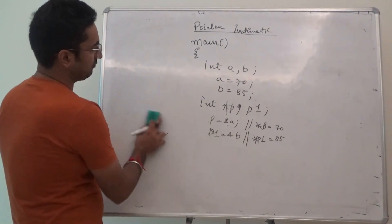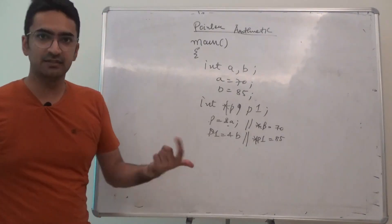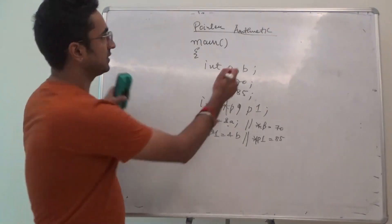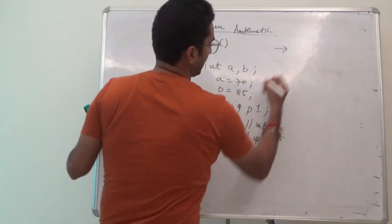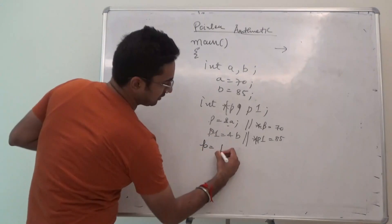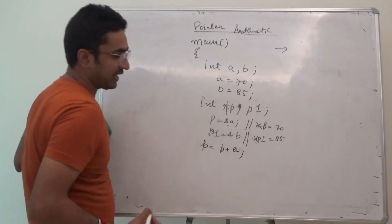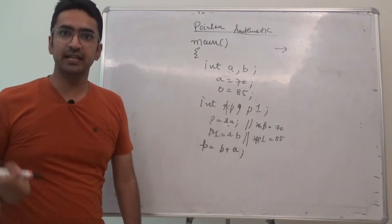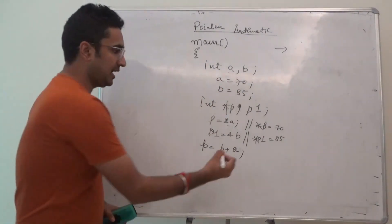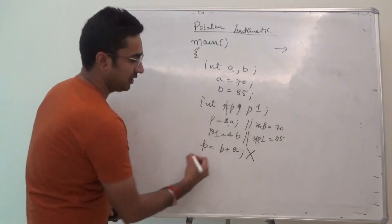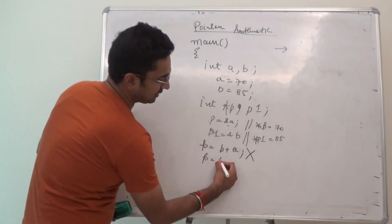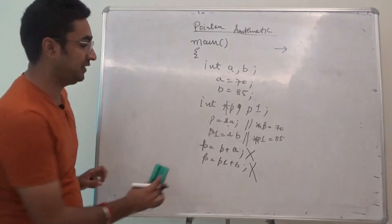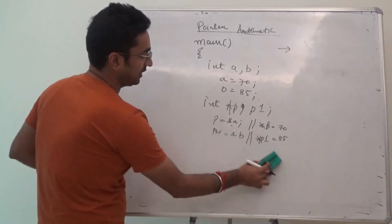So, the point over here with pointer arithmetic is that we can manipulate the values accordingly also. In pointer arithmetic, the point is direct, I cannot write p is equal to p plus a. I cannot, why? Because a is integer and p is a pointer, directly values cannot be added, so cannot be performed. I cannot also write p is equal to p1 plus b, cannot be done, but we can definitely access them accordingly.